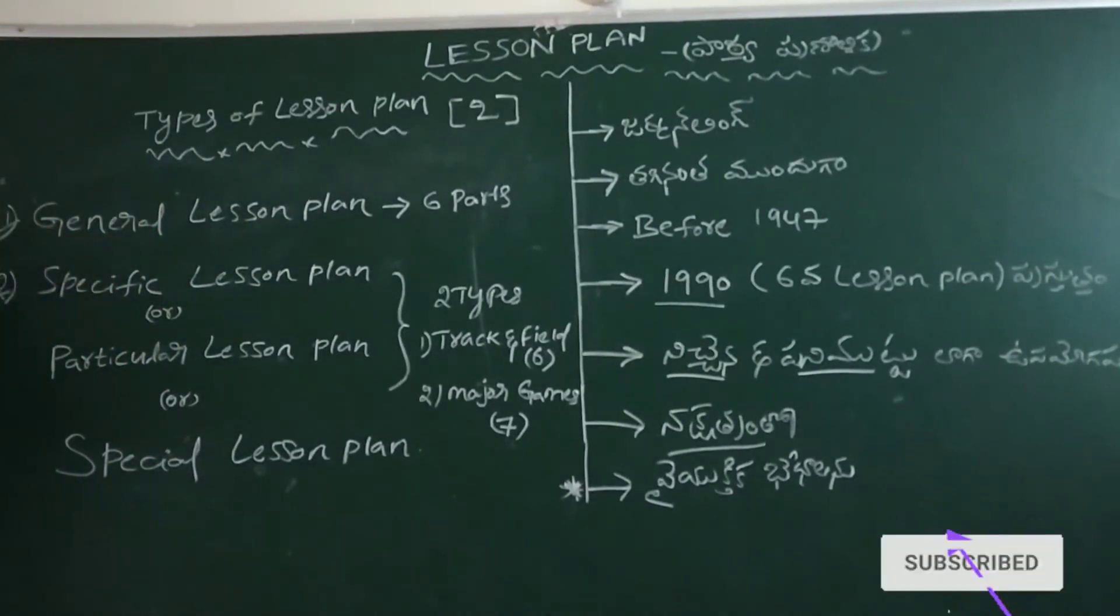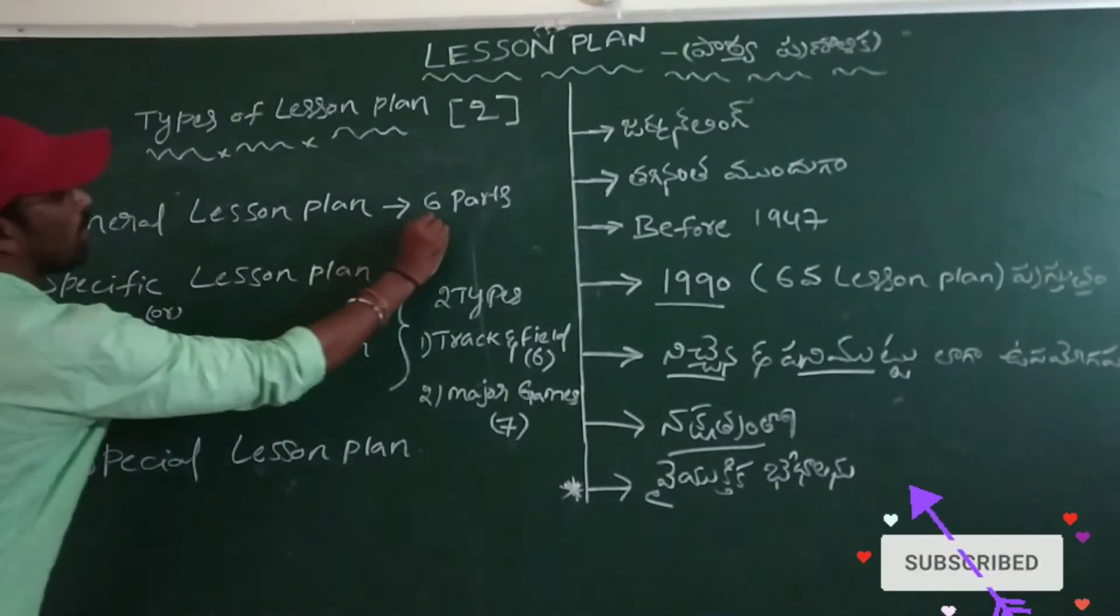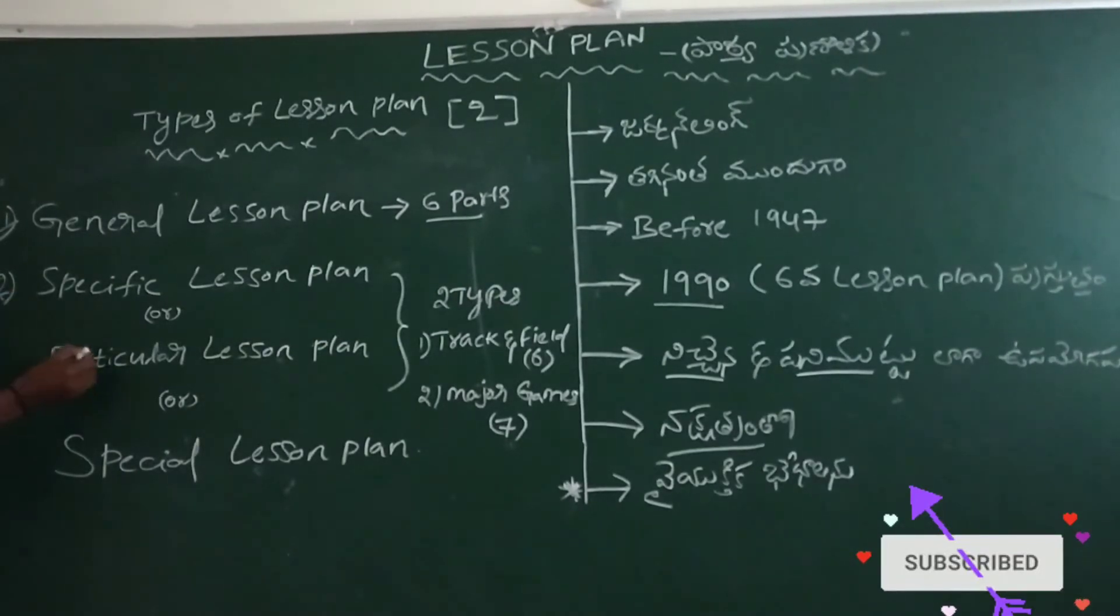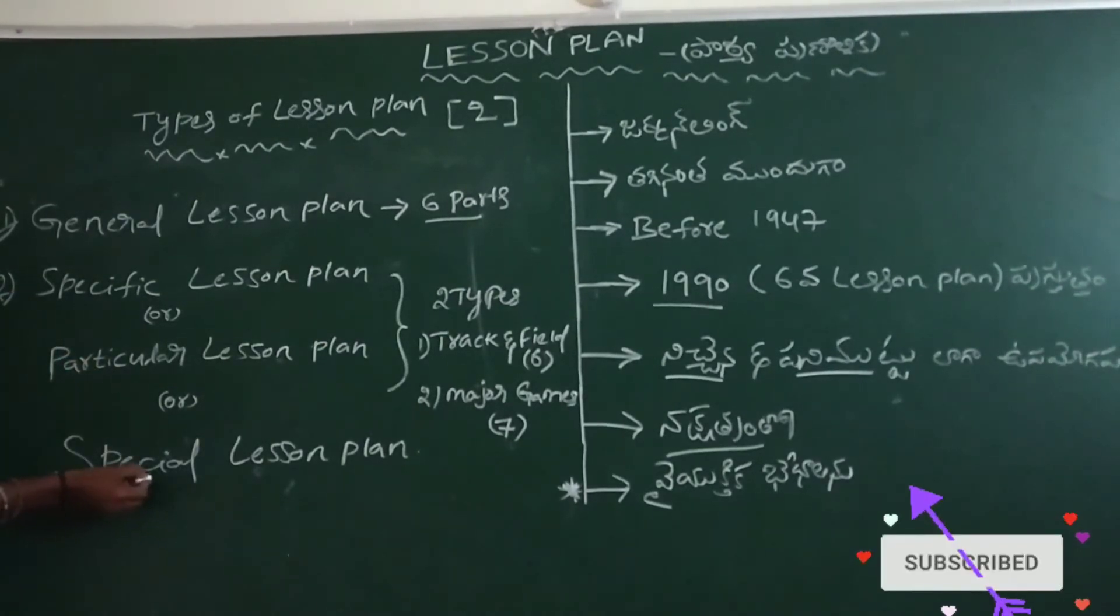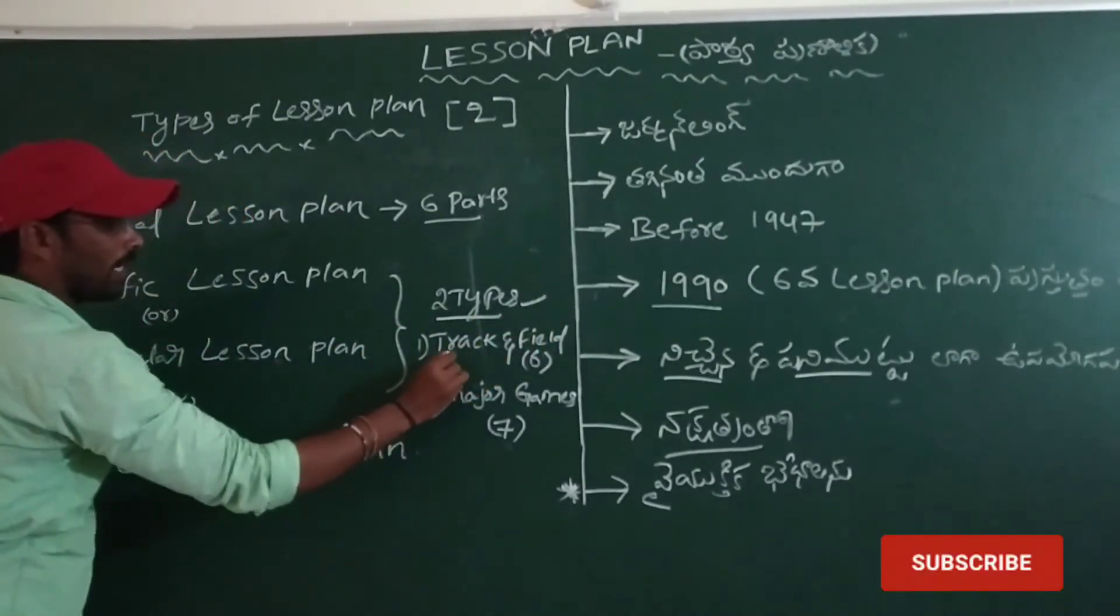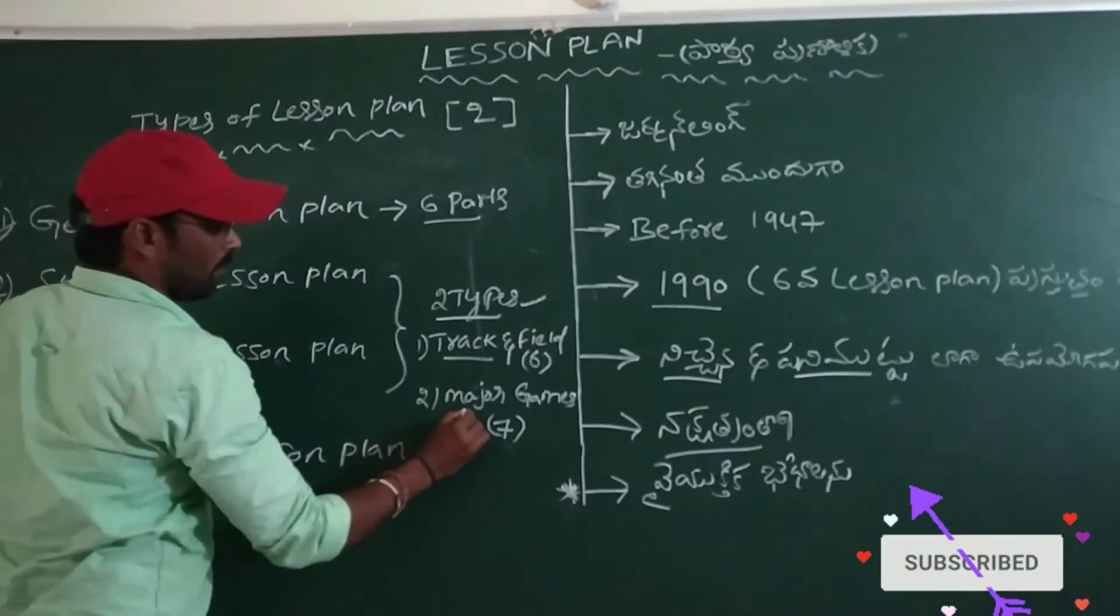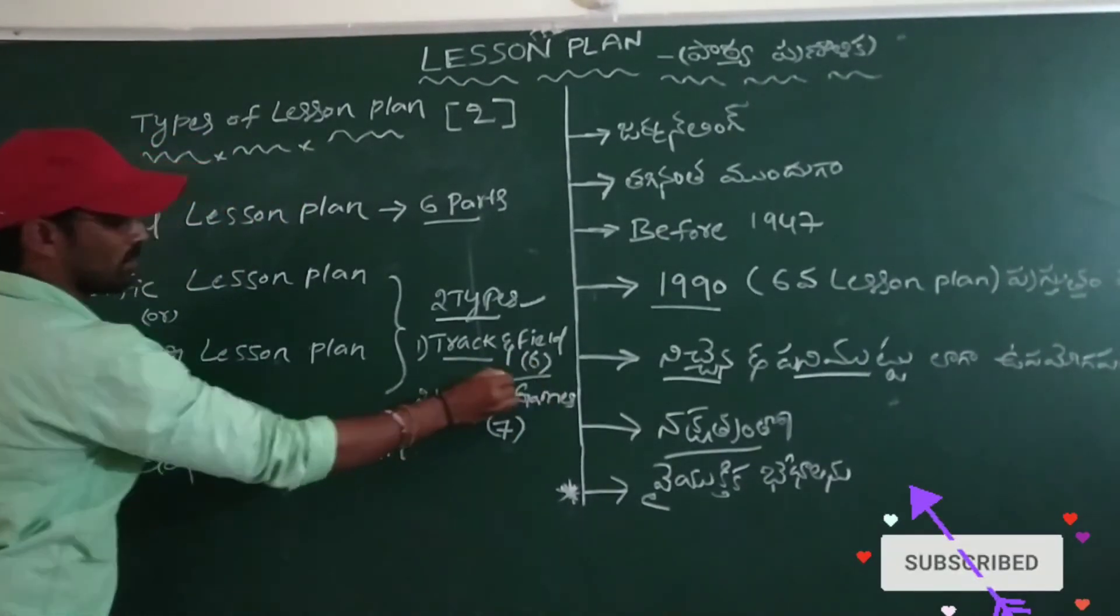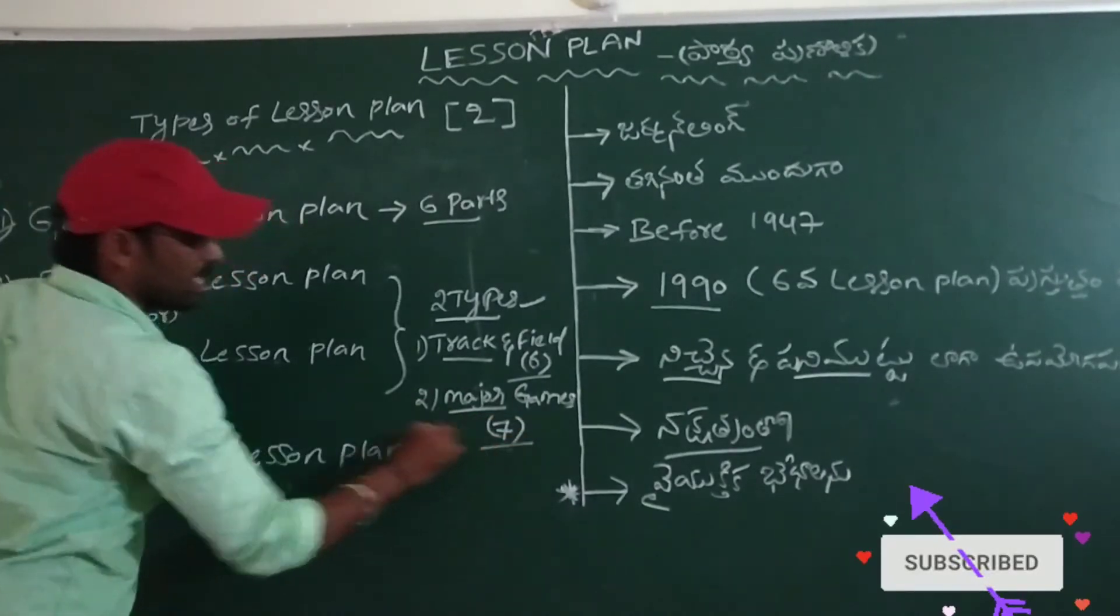We will have to do the general results. This general results are 6 percent. But in particular, special results, we will have to do two tests. We will have to do a track and field event. We will have to do major games. Track and field, 6 percent. Major games, 7 percent.